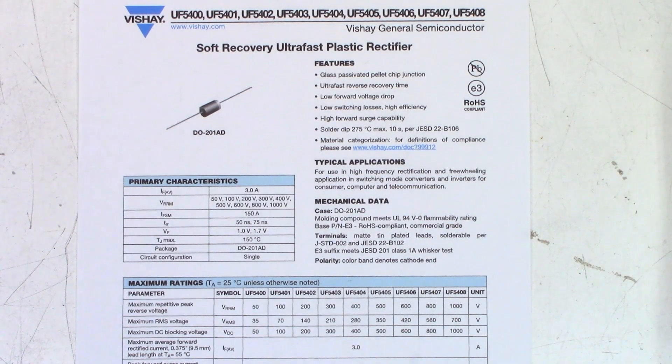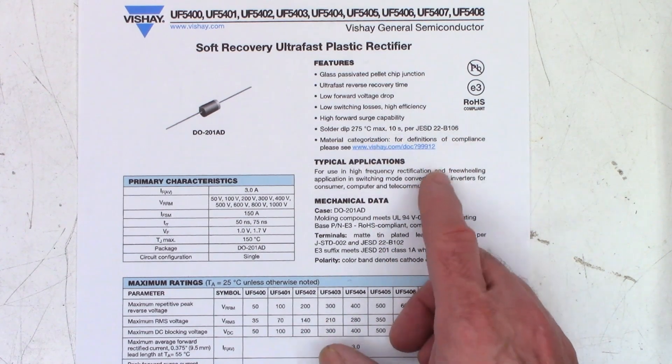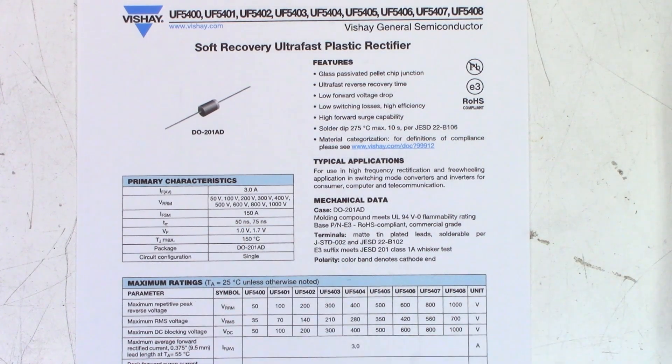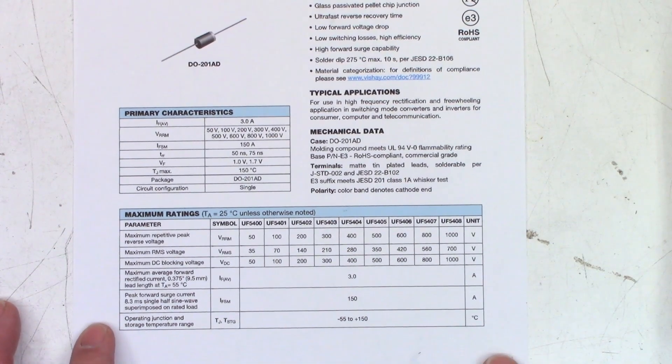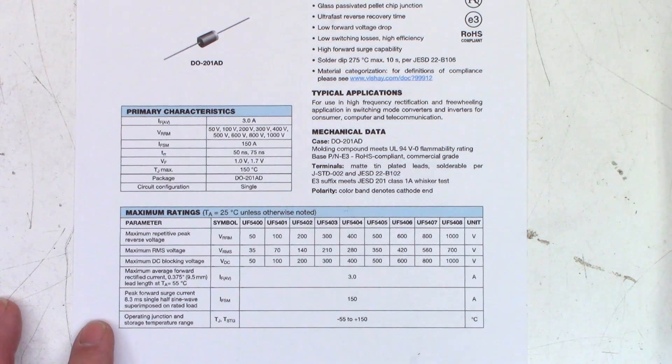Okay, it appears that Mouser does have these in stock and they are Vishay, however you want to pronounce it. I call it Vishay. But it does say soft recovery, ultra fast plastic rectifier, soldered up to 75, 10 seconds. It does talk about the timing on this somewhere and it is in the nanoseconds, 50 to 75 nanosecond recovery time. And then these are the 5404s, like I said previously, they are rated at 400 volts reverse voltage, which is one of the things you really want to look at. Max RMS 280. So they should be seeing about 160 on each of the two FETs.